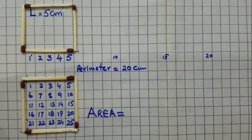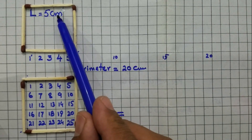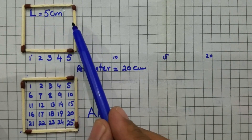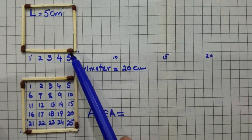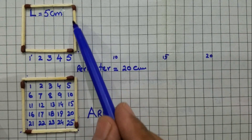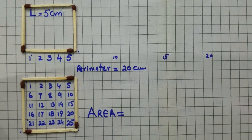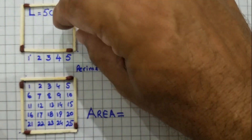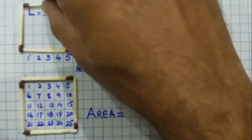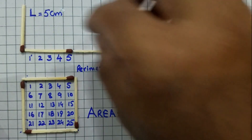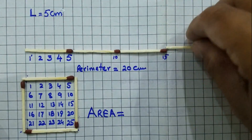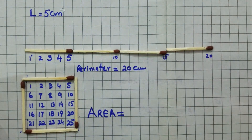Now you are seeing this is a square of length five centimeter and each matchstick is five centimeter long. One, two, three, four, five — therefore this is five centimeter long. Length is equal to five centimeters, each matchstick is equal to five centimeter long. Now we calculate the perimeter of this square. We arrange all the matchsticks as you are seeing carefully and observe.